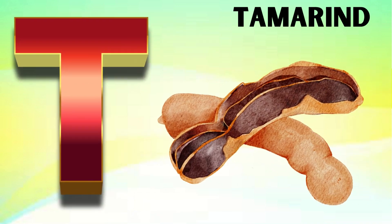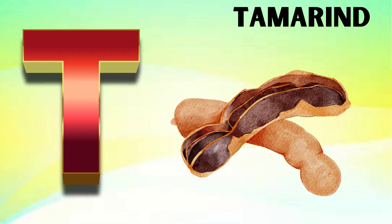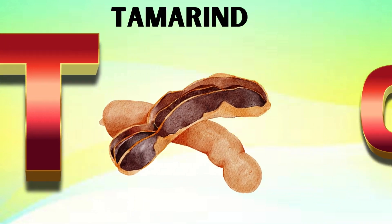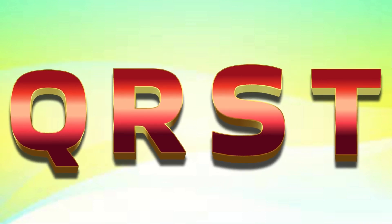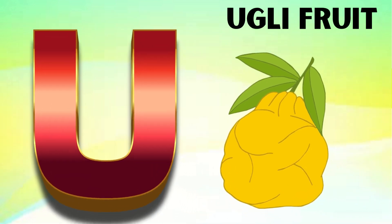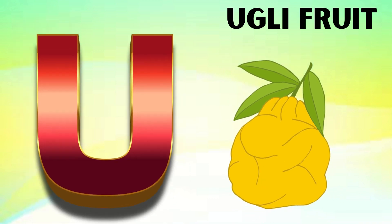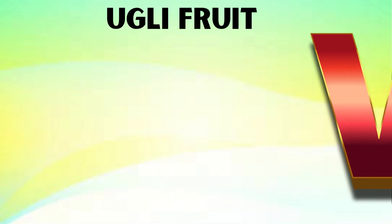T is for tamarind, t-t-t-tamarind. U is for ugly fruit, uh-uh-ugly fruit.